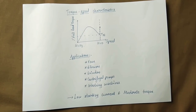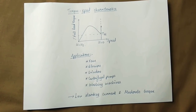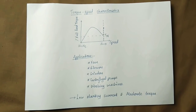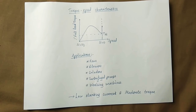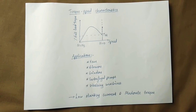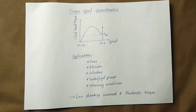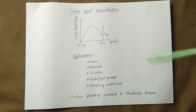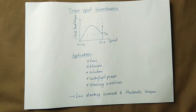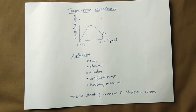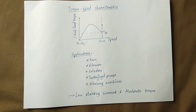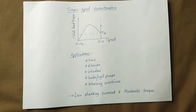If you look at the applications, you can use it in industry — such as blowers, fans, kitchen appliances, grinders, centrifugal pumps, and washing machines. The disadvantage is low starting current and moderate torque. The starting current is a little less than the full load torque requirement.